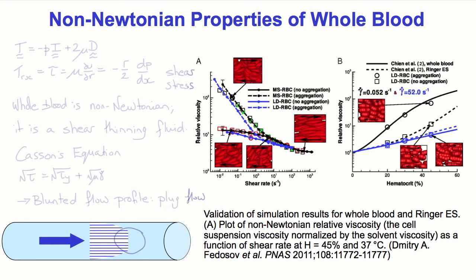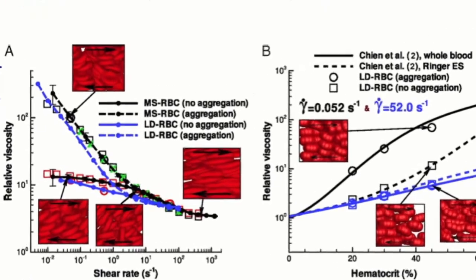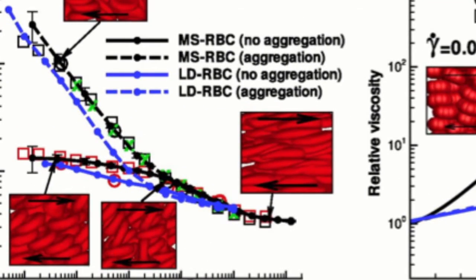Now, the Hagen-Poiseuille law was derived from the Navier-Stokes equations, which assumes Newtonian viscous fluids. Recall the viscosity mu relates the shear stress TRx, or tau, to the shear rate, which would be du dr, the radial gradient of the axial velocity. And from the Poiseuille solution, the shear stress is minus r over 2 dp dx. However, whole blood is a non-Newtonian shear thinning fluid.